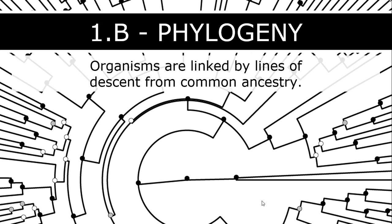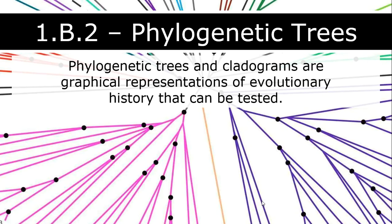Phylogenies show how organisms are linked together — their evolutionary relationship — basically how closely related they are, who their most common ancestor is, and when that evolved.